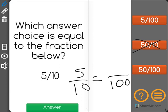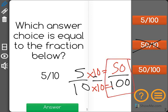Now to go from 10 to 100, I had to do 10 times 10. If I multiply by 10 on the bottom, I have to do the same on the top to get 50. So 5 over 10 is equal to 50 out of 100.